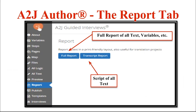Then we have the Report tab. The Report tab is a great tool to use when you've basically finished your guided interview and need to have it peer reviewed. The full report will generate a report of all text, variables, and all conditions used inside a guided interview. The transcript report is just a script of the text. If I was having the interview translated into another language, I would use the transcript report because the translator only needs to see the forward-facing text for the end user.